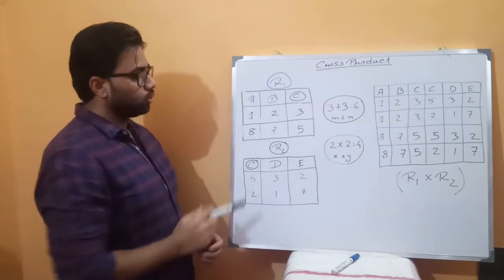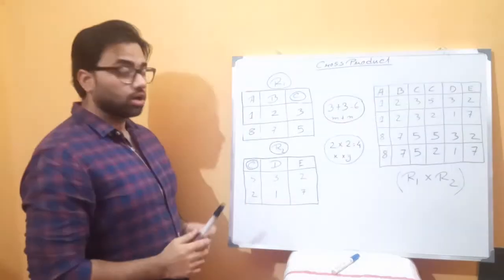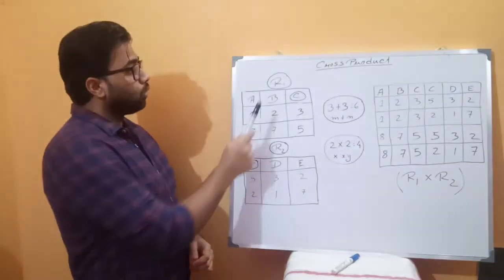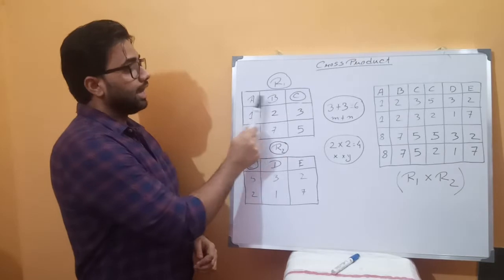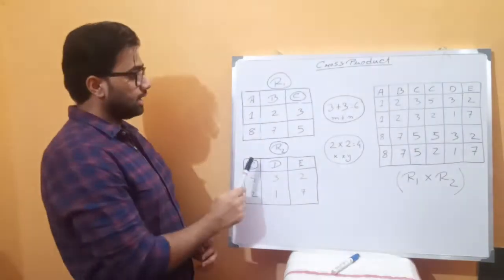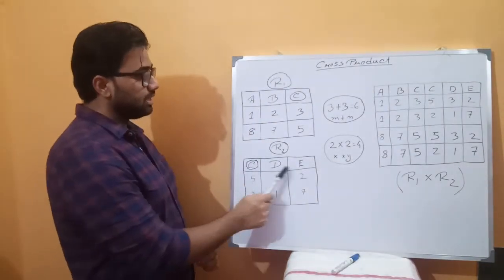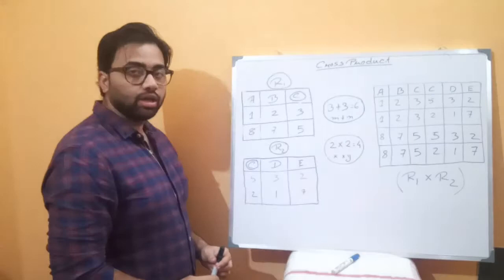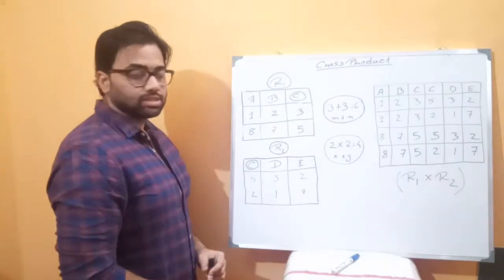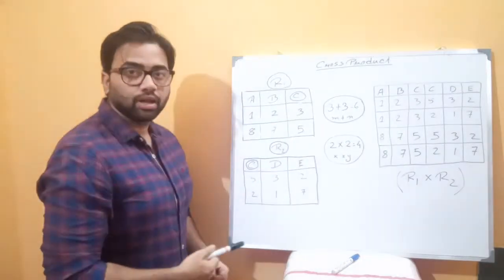We have two tables, R1 and R2. Table R1 has attributes A, B, C, and R2 has attributes C, D, E. These are all the attributes of our two tables.